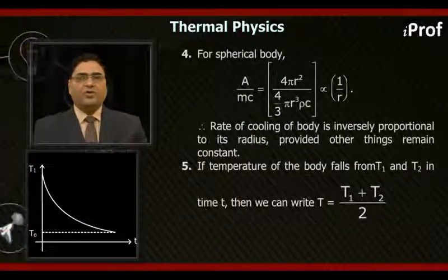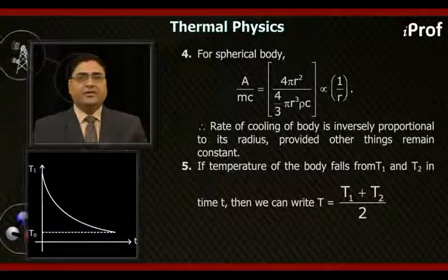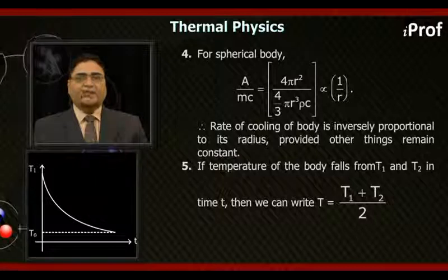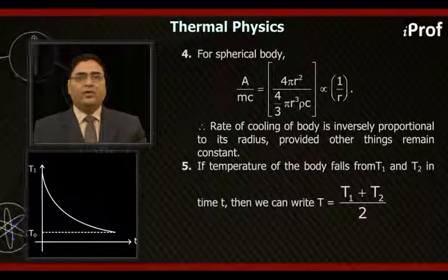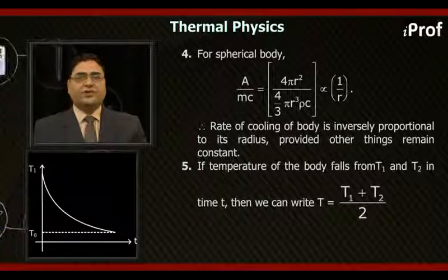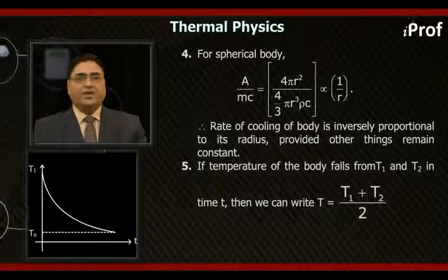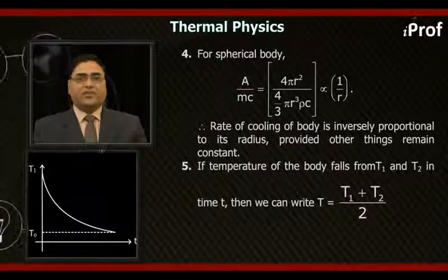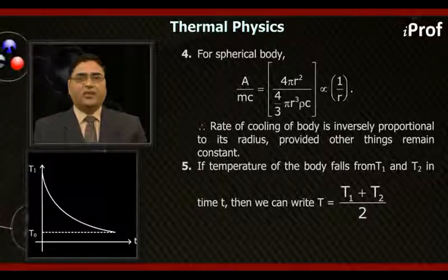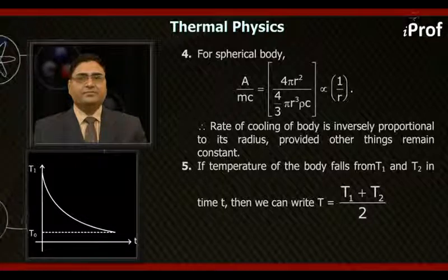Fourth, for spherical body, A upon MC equal to 4πR squared upon 4 upon 3 πR cubed times ρ times C, proportional to 1 upon R. Therefore, rate of cooling of solid body is inversely proportional to its radius, provided other things remain constant.